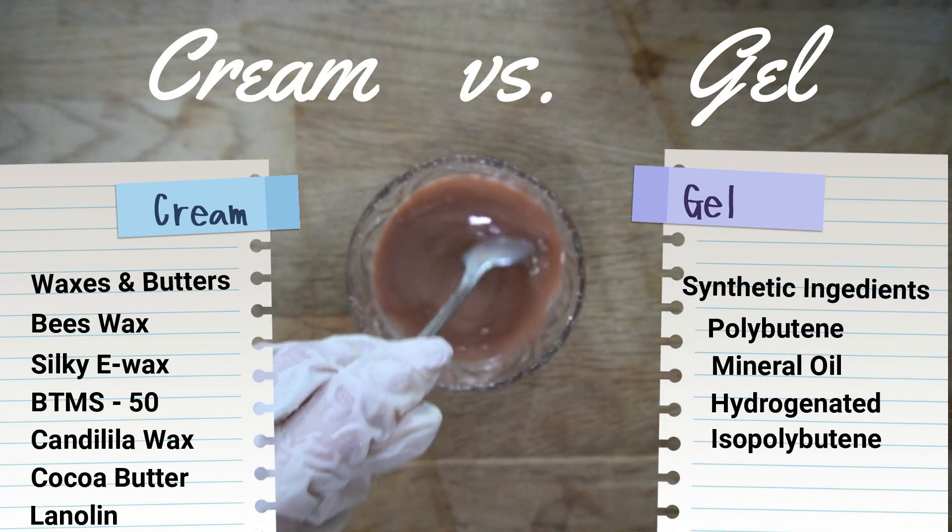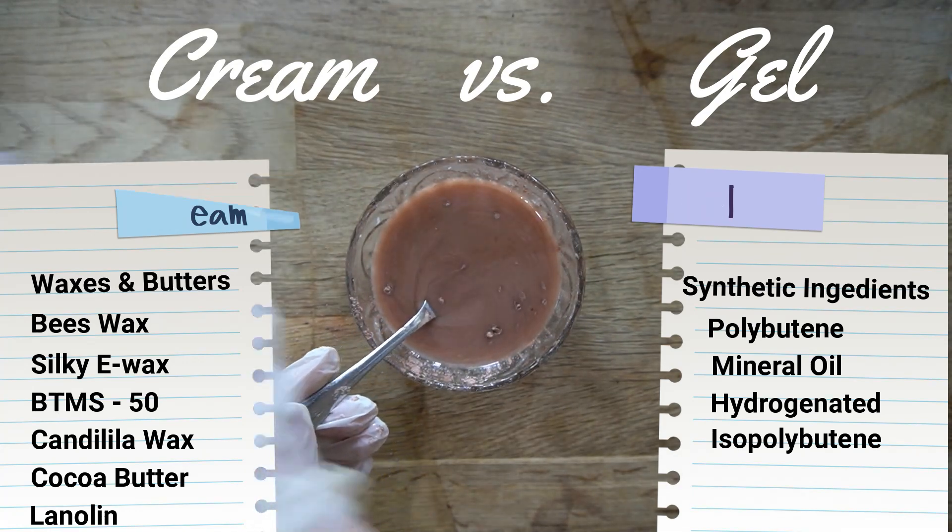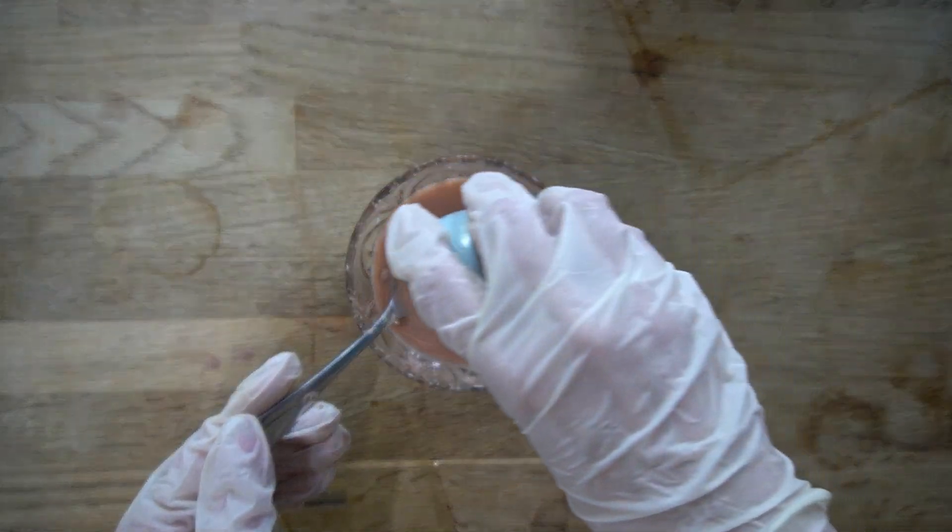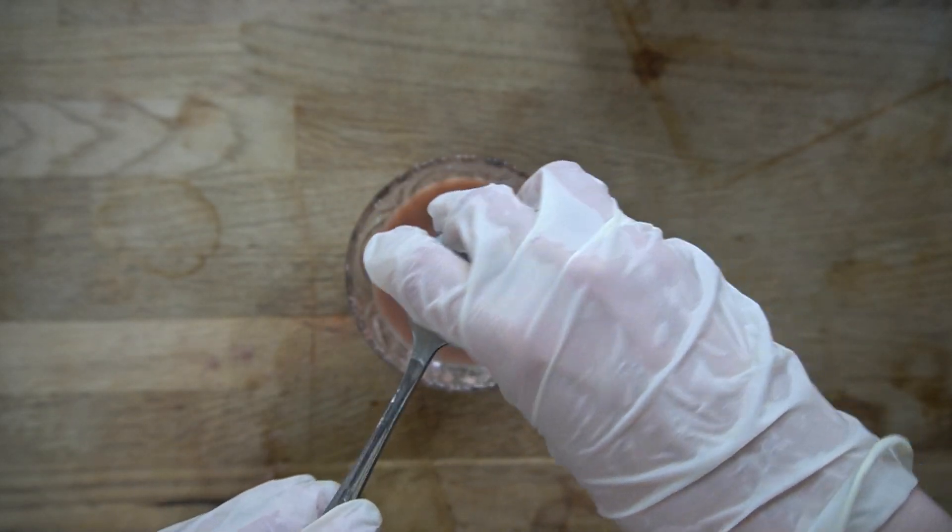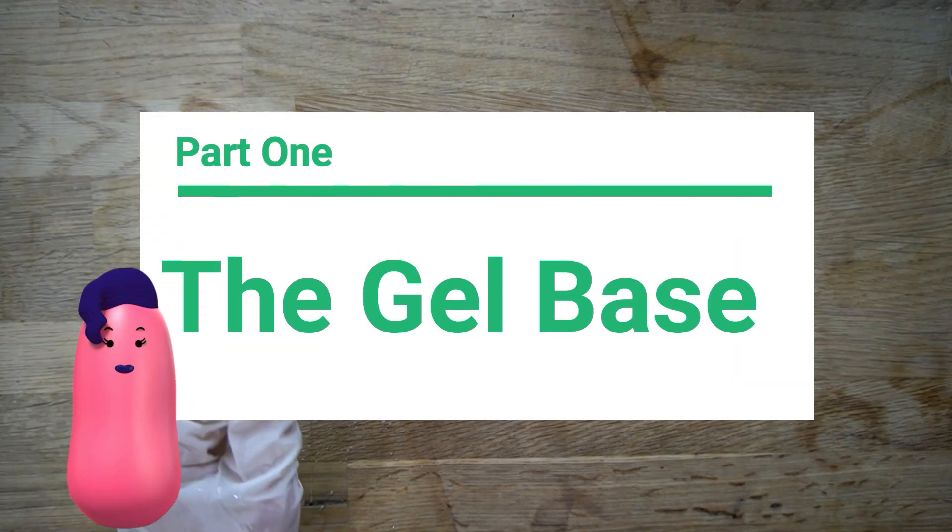Typically, if you're familiar with making clear gel lip gloss, you might know that most people buy a gel base and add a flavor and then add some decoration. But here, we're going to break it down so that you have more control over what goes into your product.